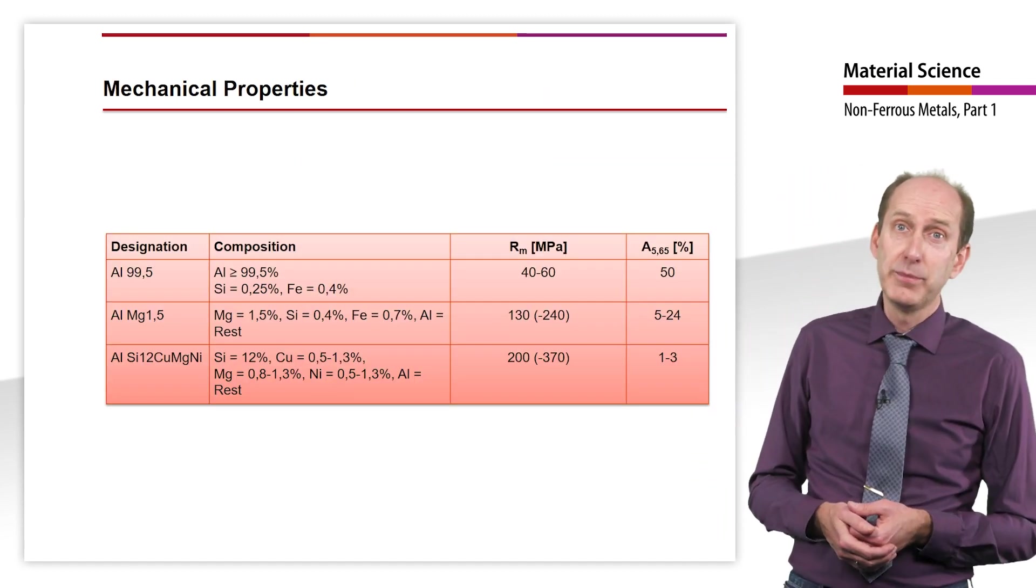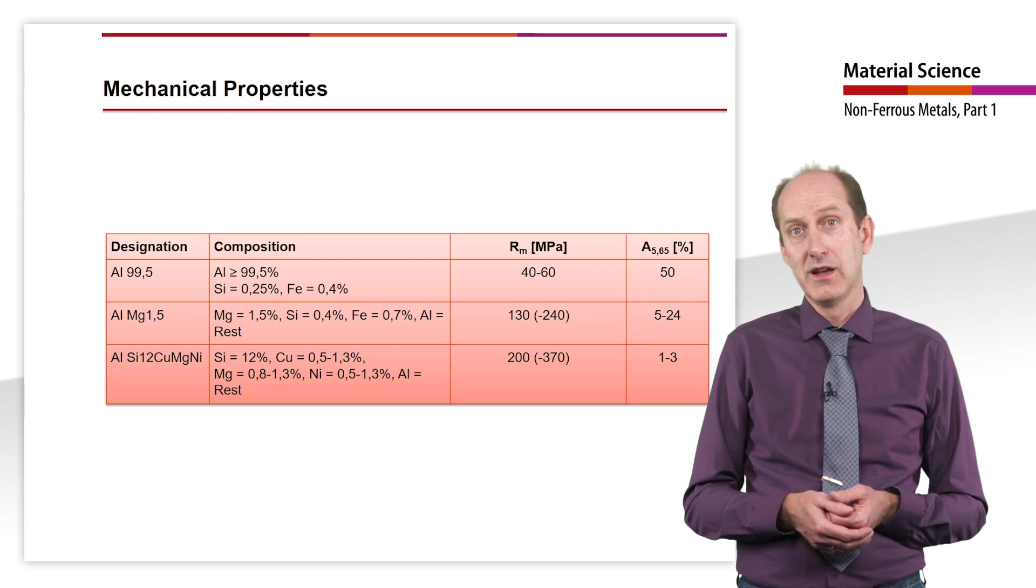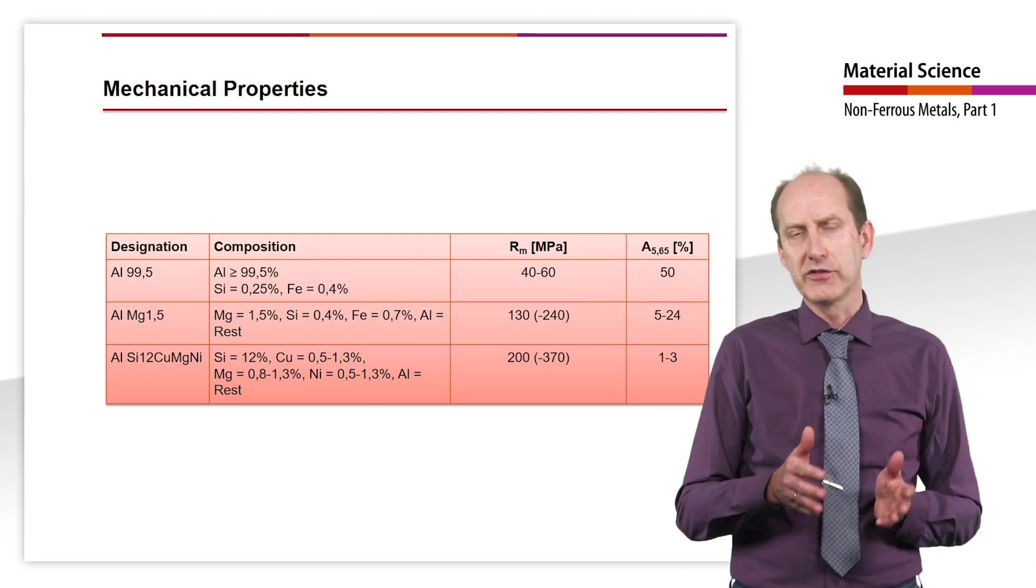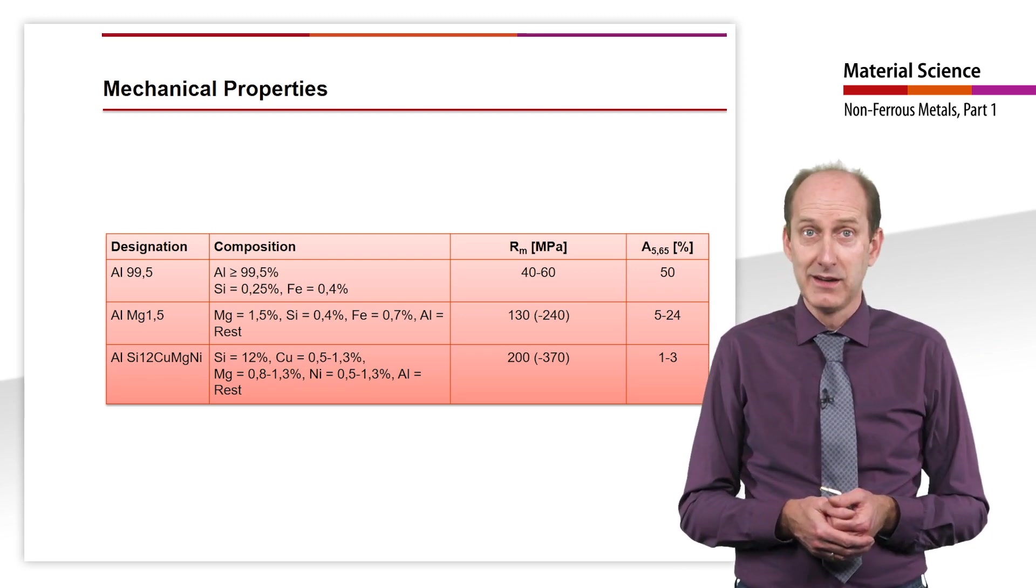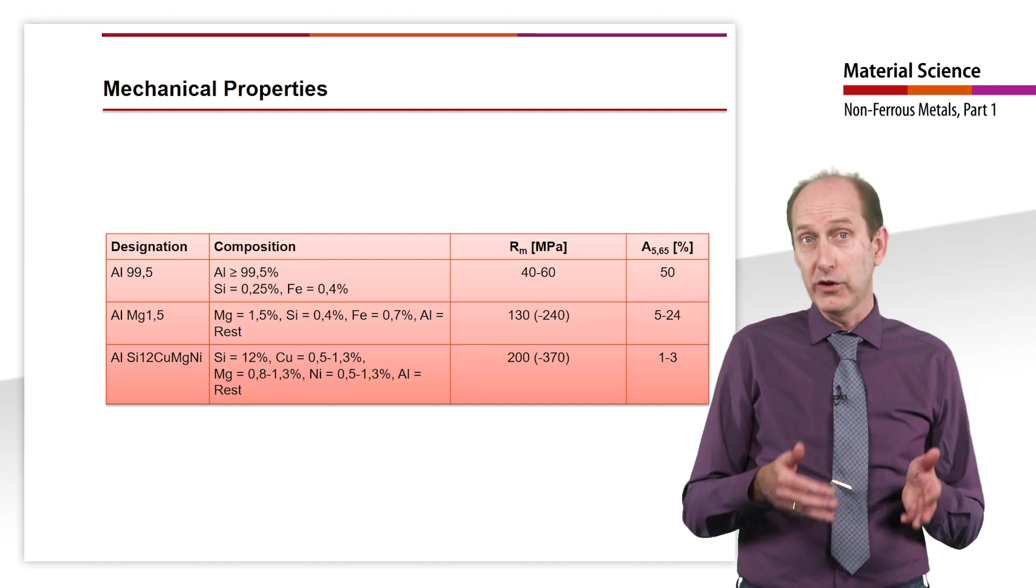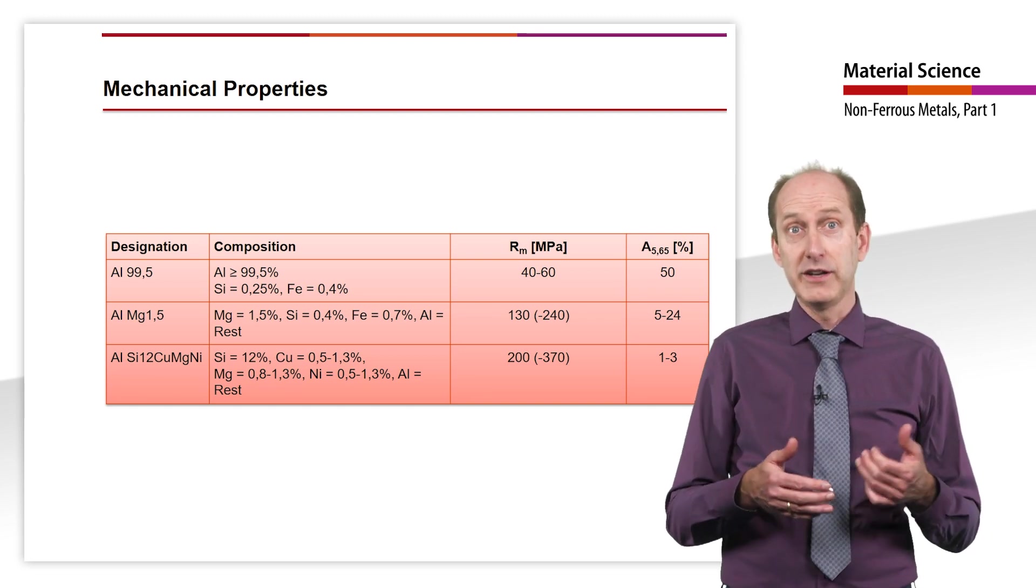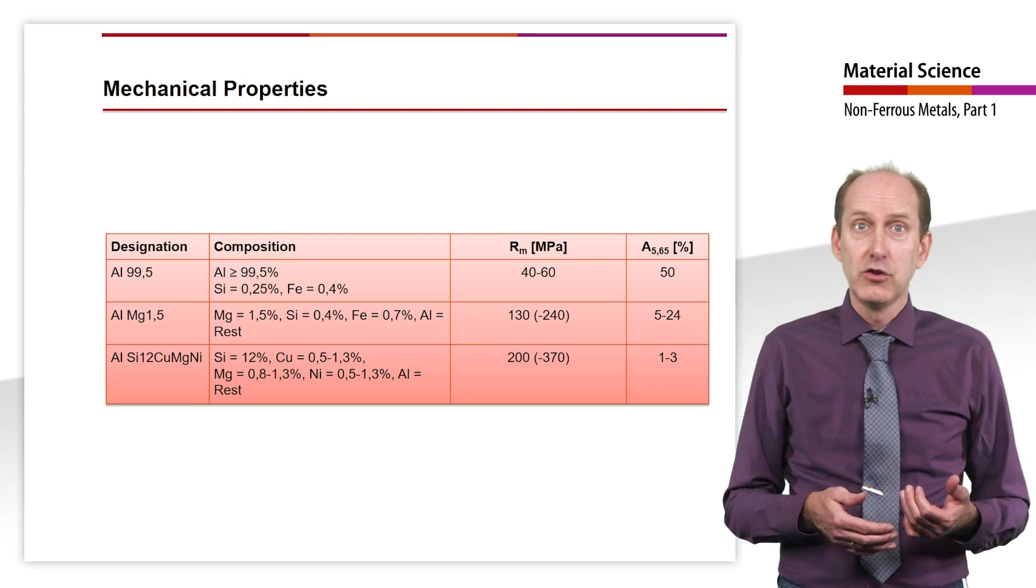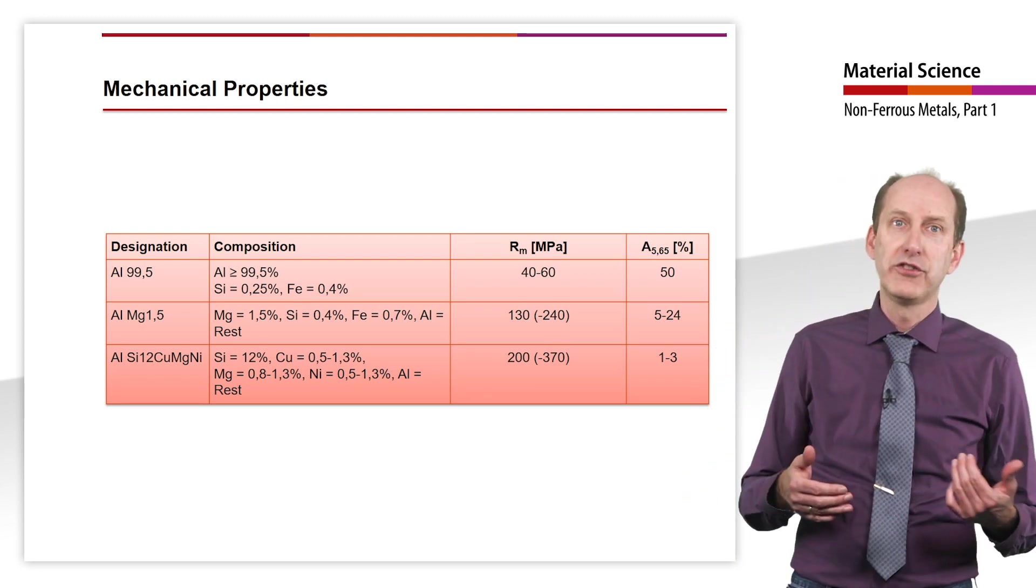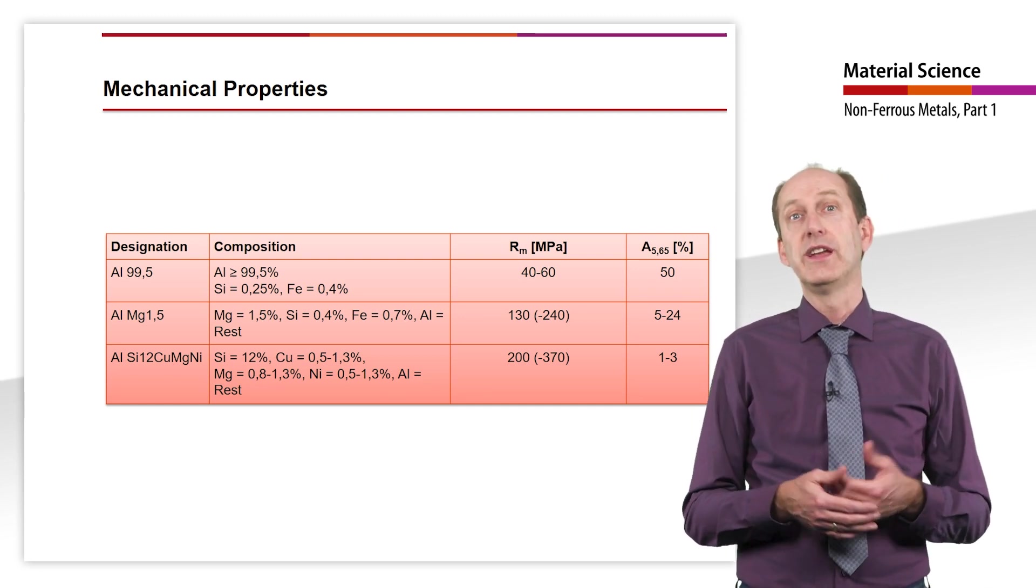Aluminum, as a typical face-centered cubic material, has a high elongation at break of approximately 50%. However, as already mentioned, the strength is very low and usually amounts to approximately 40 to 60 MPa. The example of AlMg1 clearly shows that the strength can be increased to 130 MPa by adding small amounts of magnesium, for example, through solid solution formation. This value could be significantly increased again by cold forming. While alloying already causes a reduction in toughness, the elongation at break naturally decreases further with increasing cold working.